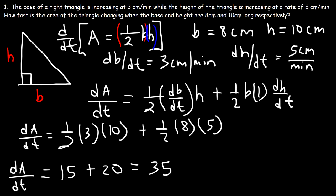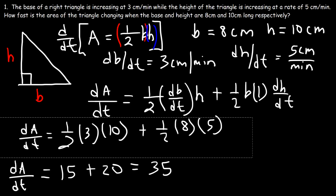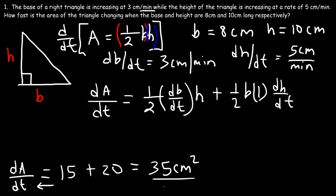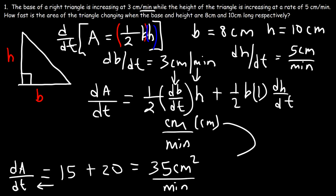Now let's focus on the units for dA/dt. Area is always in square units, and we're dealing with centimeters, so the area unit is square centimeters. Time is in minutes, so the answer is 35 square centimeters per minute. You can verify this by noting db/dt is in centimeters per minute, times h in centimeters, giving square centimeters per minute. So the final answer is 35 square centimeters per minute.